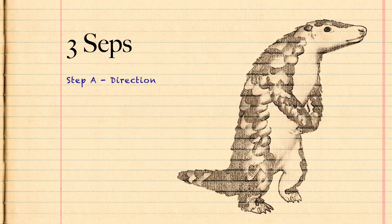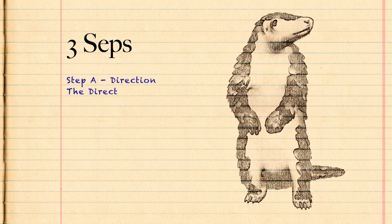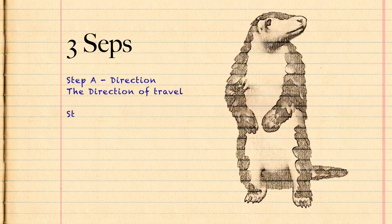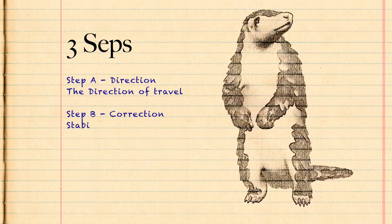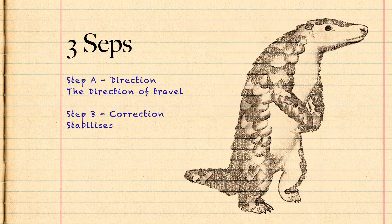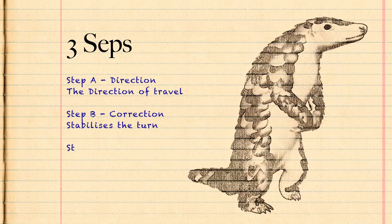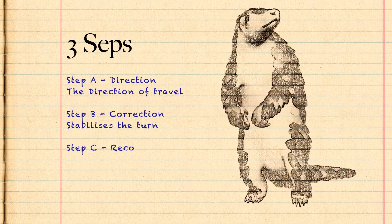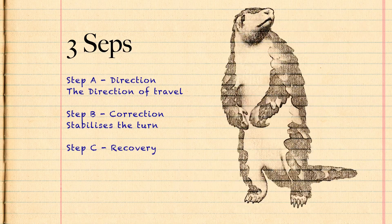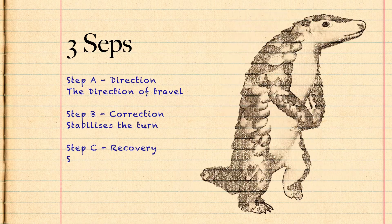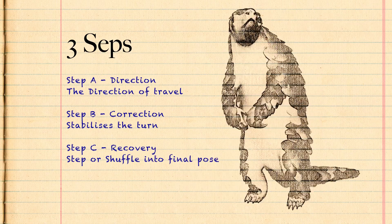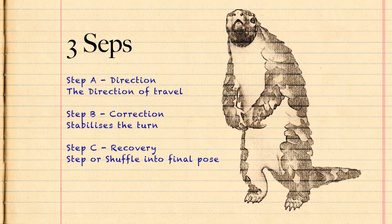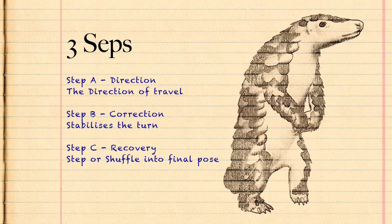Step A: direction, which establishes the direction of travel. Step B: correction, which actually acts like a stabilizer in correcting that weight shift mid-turn. And Step C: the recovery. Sometimes Step C is actually a full step or merely a shuffle, but it's an important weight shift that beds our character into its final pose.